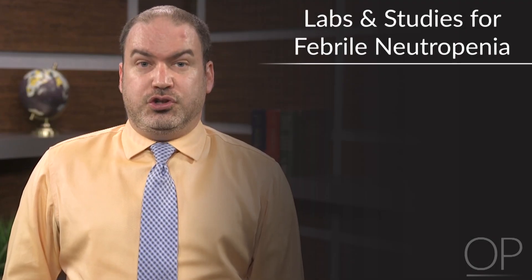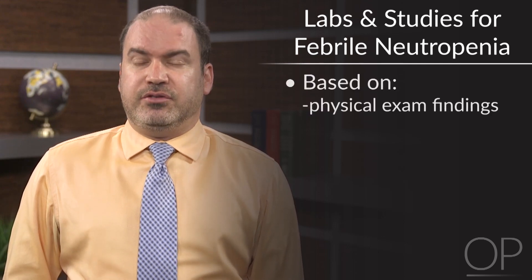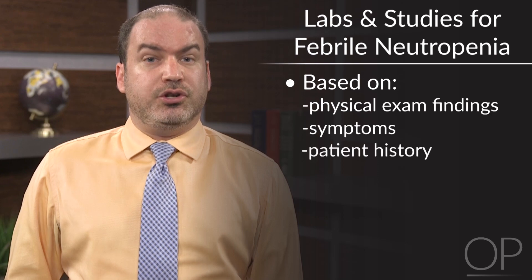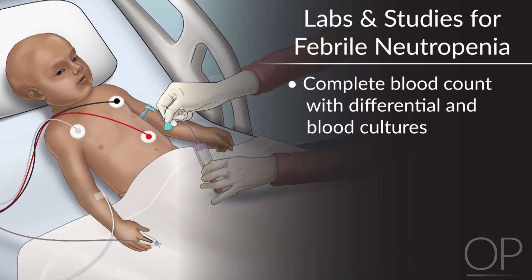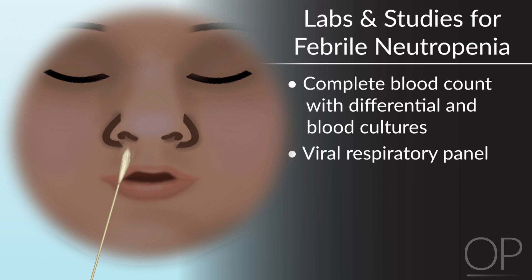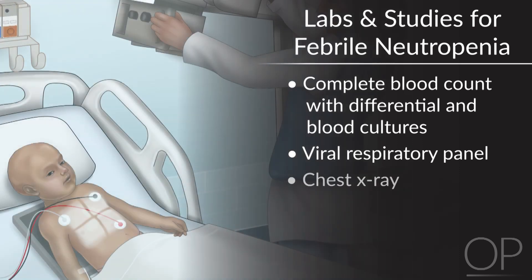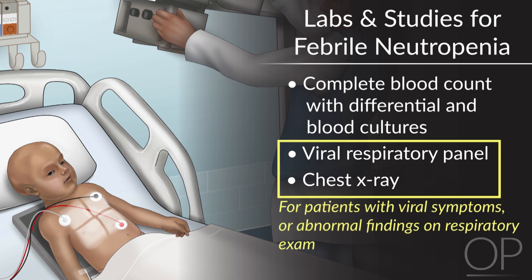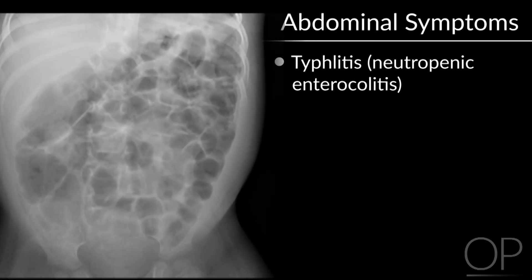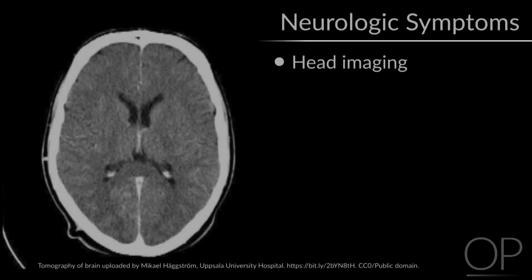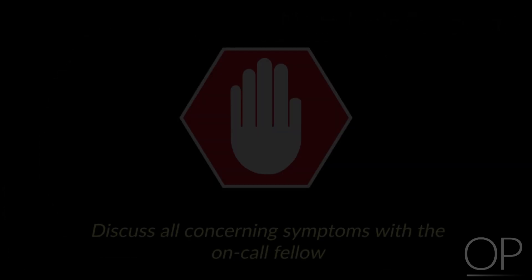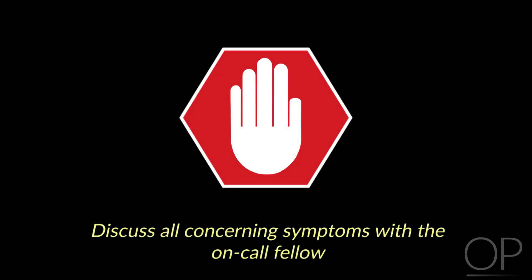What labs and studies should you order in a febrile neutropenic patient? Physical exam findings, symptoms, and patient history should guide your evaluation. All patients must have a complete blood count with differential and blood cultures drawn at the time of fever. Consider also obtaining a viral respiratory panel or chest x-ray for patients with viral symptoms or abnormal findings on respiratory exam. In neutropenic patients with abdominal pain, a can't-miss diagnosis is typhlitis, also called neutropenic enterocolitis. For patients with abdominal pain or diarrhea, consider abdominal imaging and stool studies. If a patient has neurologic symptoms, consider head imaging. For all of these concerns, you should be discussing the appropriate workup and management with your on-call fellow.